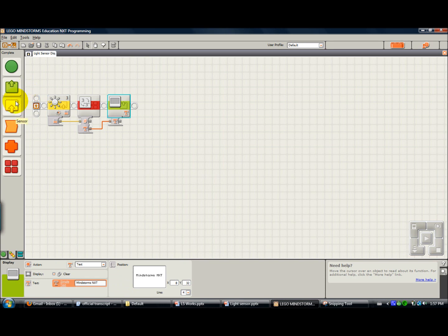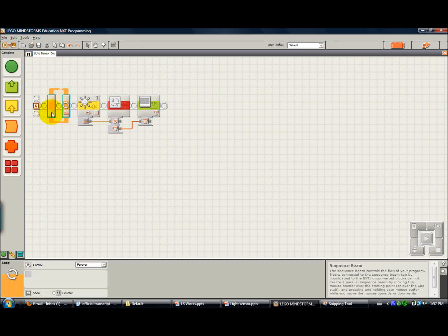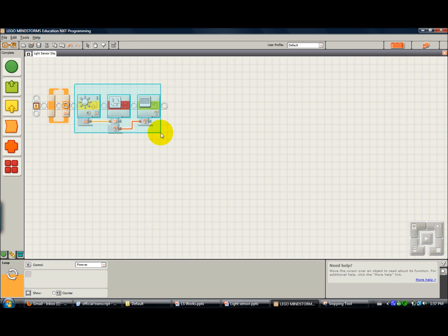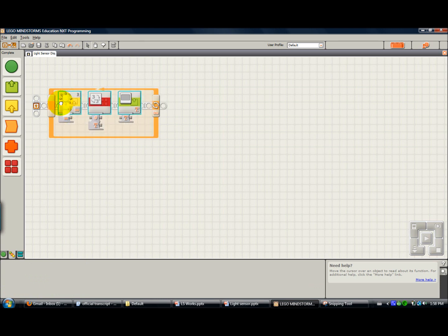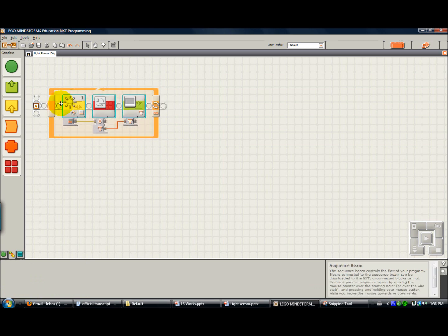Now we're going to put this in a loop so that it will do it over and over again. I'm just going to put my loop right there, drag and drop, and then I'm going to highlight these three blocks. That's a click and a drag, and click and drag into here and then release them.